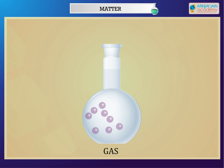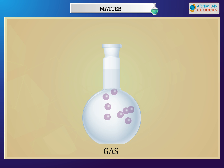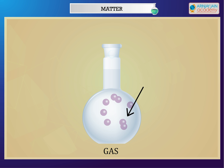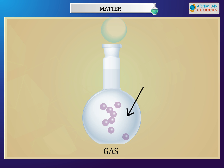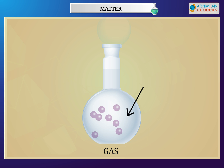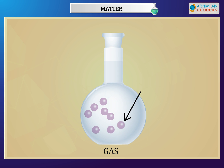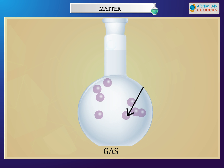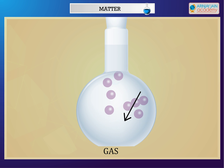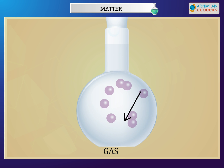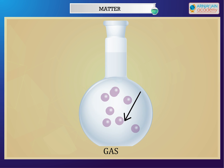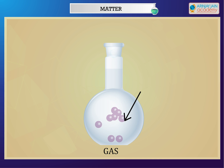In a gas, the molecules are packed very loosely and are free to move in any direction. As the molecules can spread easily, the space between the particles keeps on changing. Thus, gases have no fixed shape or volume.